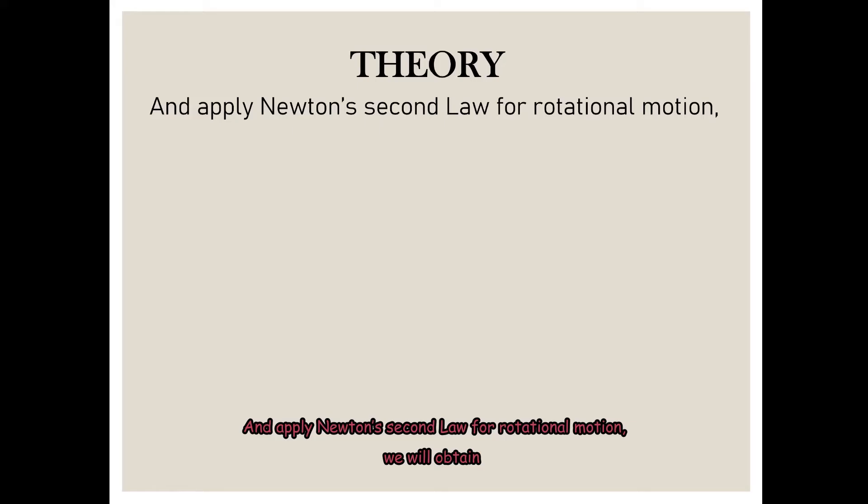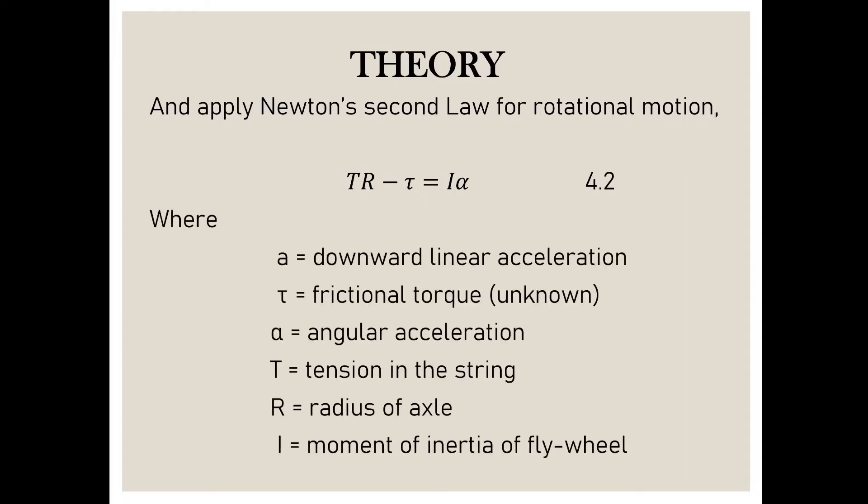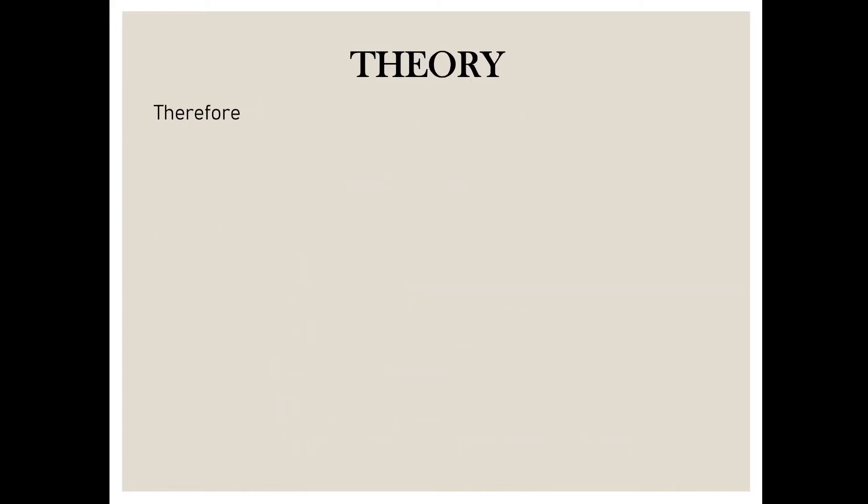And apply Newton's second law for rotational motion, we will obtain TR minus τ equals Iα. Where a is the downward linear acceleration, τ is the frictional torque, α is the angular acceleration, T is the tension in the string, R is the radius of axle, and I is the moment of inertia of flywheel.